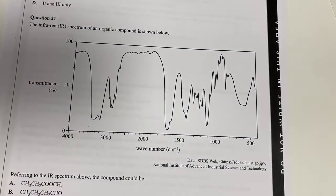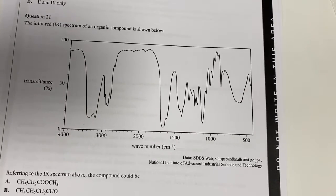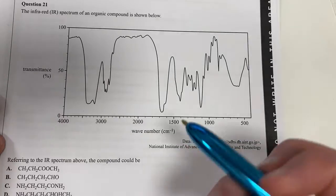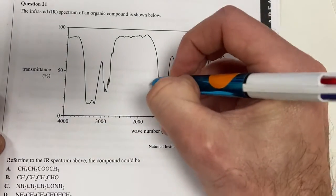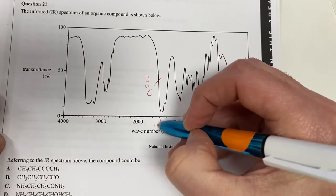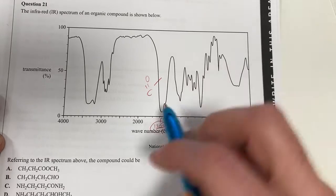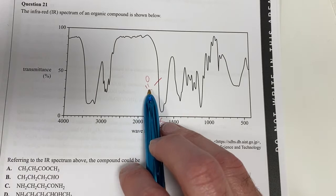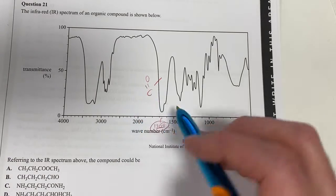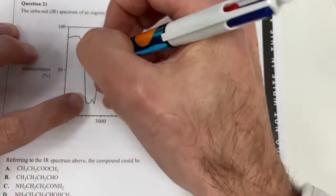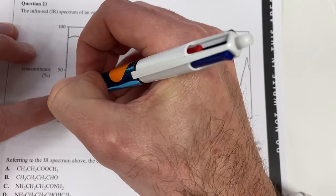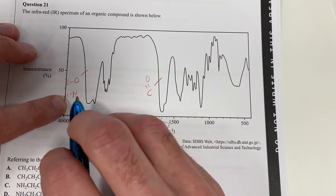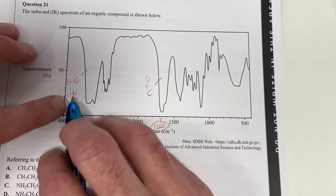Question 21 is an infrared spectroscopy question — I love these because they're relatively straightforward most of the time. Looking at this, I can see that I've got a C double bond to O here because that's sitting around about 1700 — that's a carbonyl, a C=O bond.